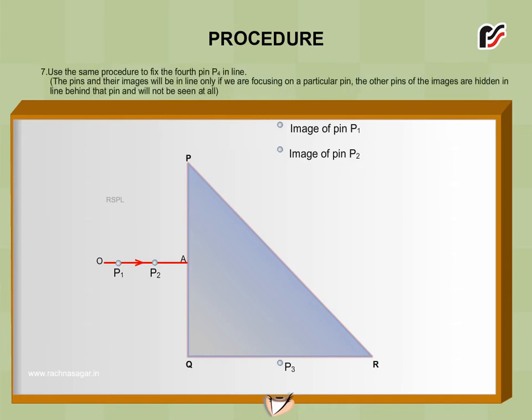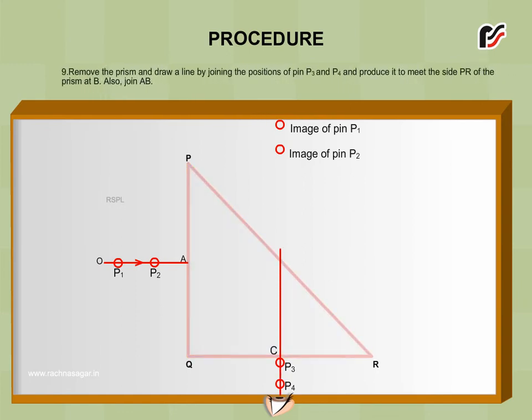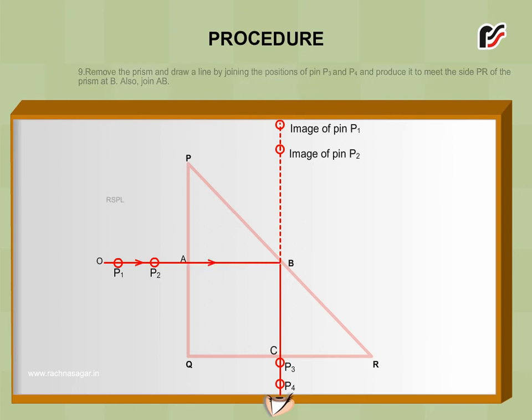Use the same procedure to fix the fourth pin P4 in line. Remove the pins and mark their position by encircling the dots created by the pins in the paper. Remove the prism and draw a line by joining the positions of pin P3 and P4 and produce it to meet the side PR of the prism at B. Also, join AB.